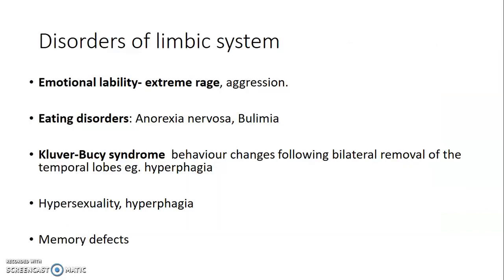So that's the Papez circuit. What are the disorders of the limbic system? If there are lesions within the components of the limbic system, the patient can present with emotional lability — they could have extreme rage or aggression disproportionate to the trigger. Then we also have eating disorders like anorexia nervosa and bulimia. We have what we call Klüver-Bucy syndrome, where you have behavioral changes following bilateral removal of the temporal lobe — the patient will be eating too much all the time. Then there is hypersexuality — always having the urge to have sexual intercourse — and hyperphagia, which is eating a lot. Memory deficits also occur because the hippocampus is responsible for long-term memory.